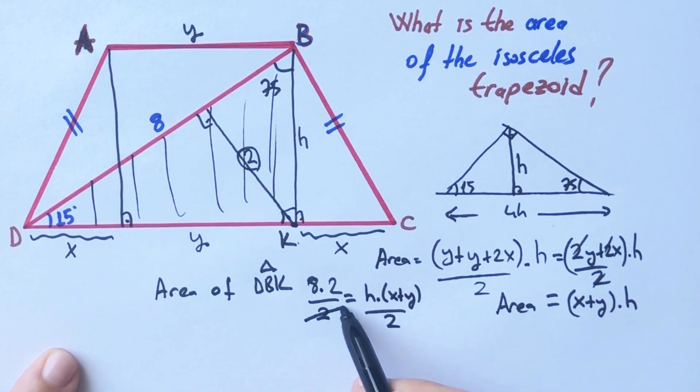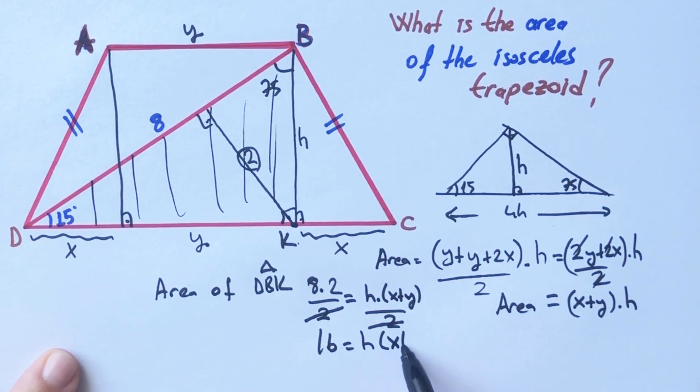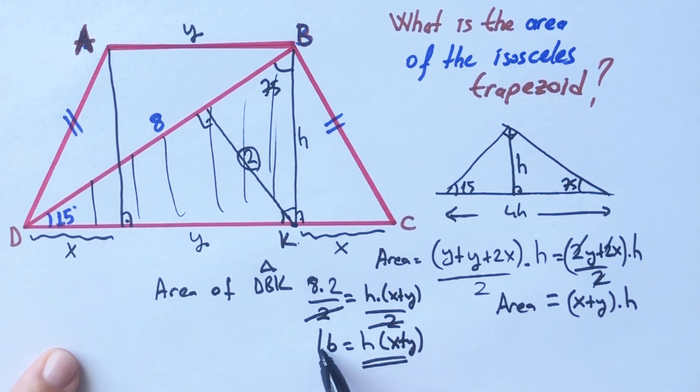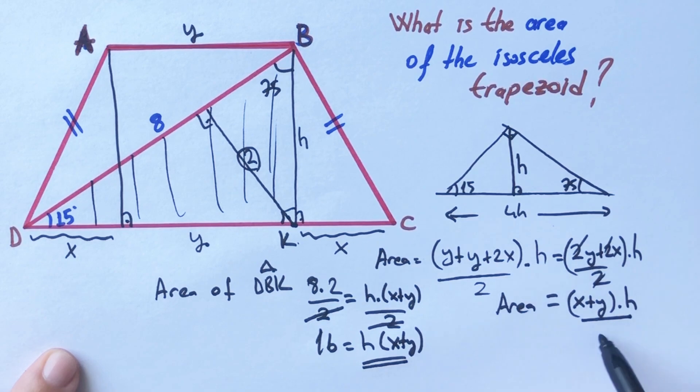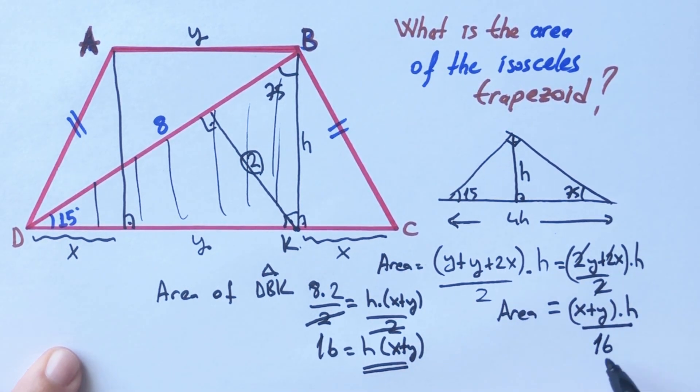So these are again. Therefore, 16 equals h times x plus y. If you notice that these two expressions are equal, that means the area of the isosceles trapezoid equals 16 unit square.